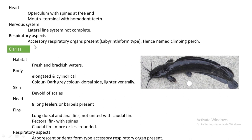Regarding respiratory aspects, Anabas can breathe atmospheric air with the help of a special additional respiratory structure called an accessory respiratory organ. In Anabas, the accessory respiratory organ is in the labyrinthine form. Because of this accessory respiratory organ, it is called the climbing perch, as it can move outside the stream across muddy land by taking atmospheric air instead of relying on water.